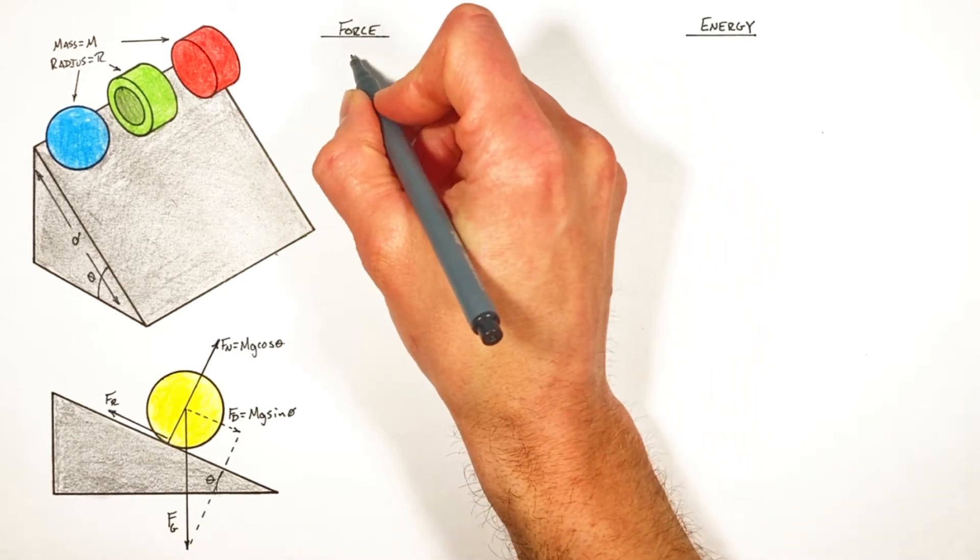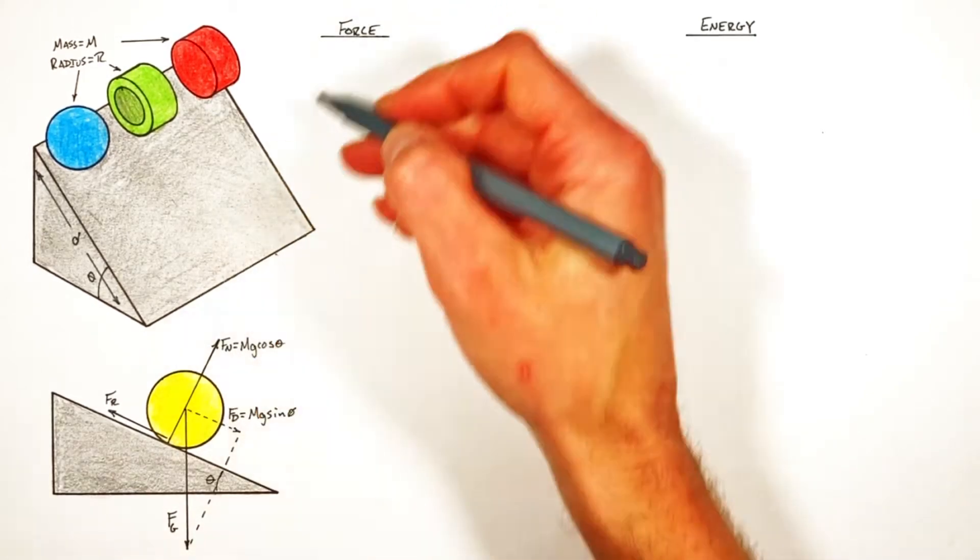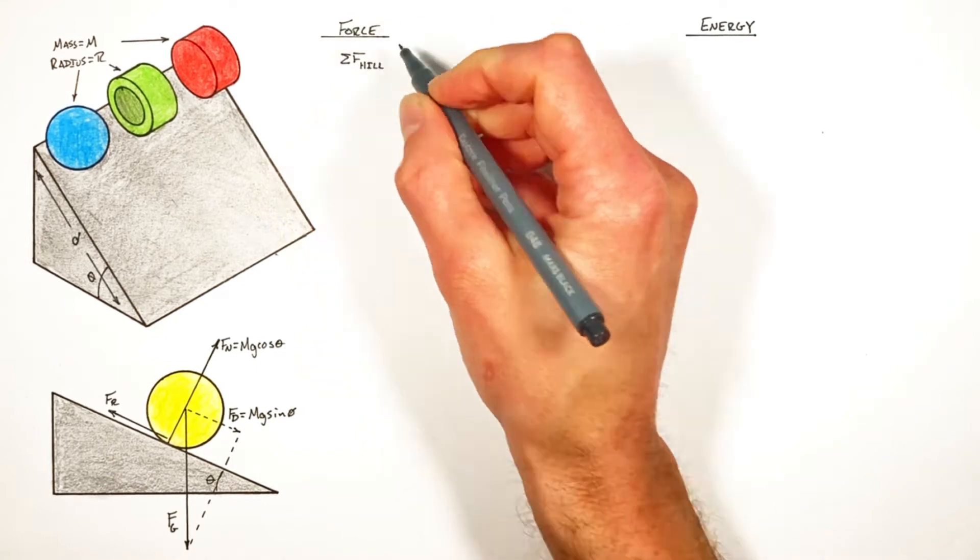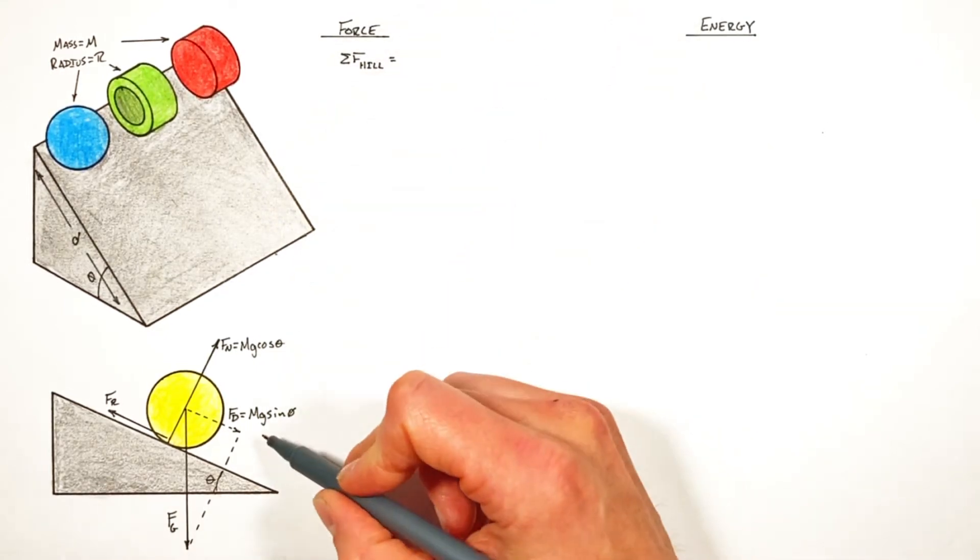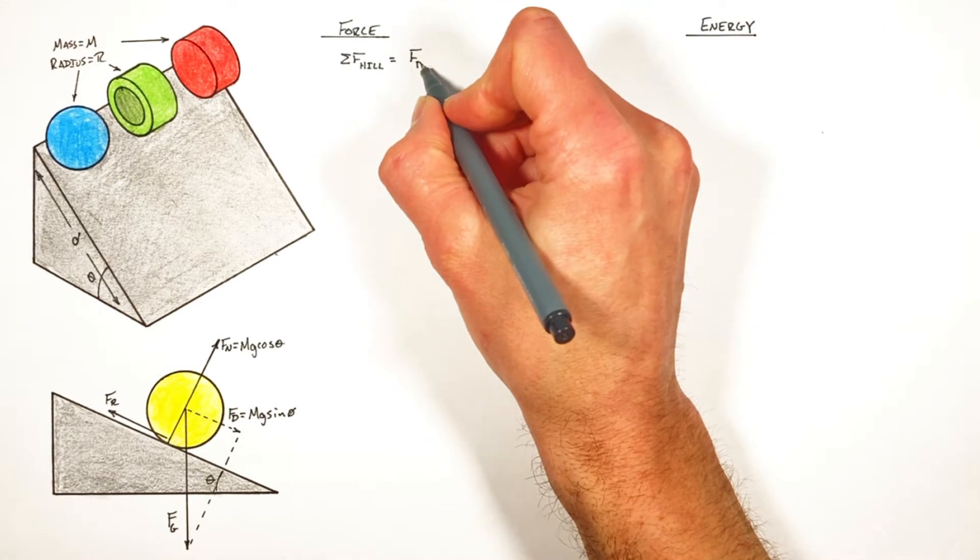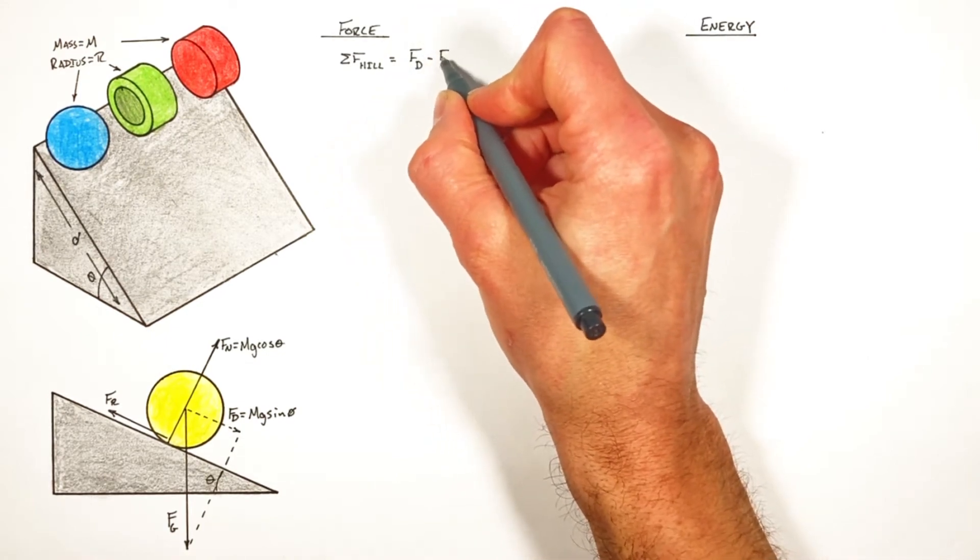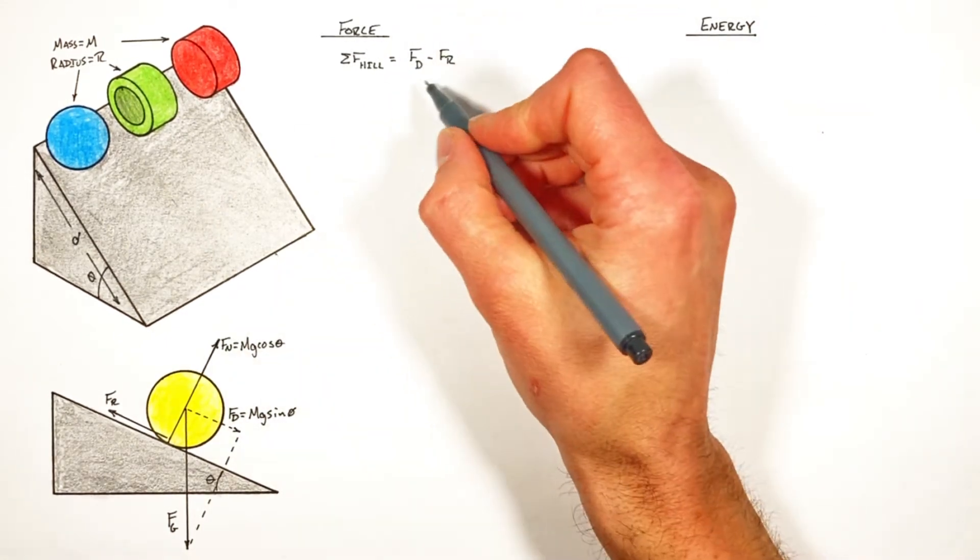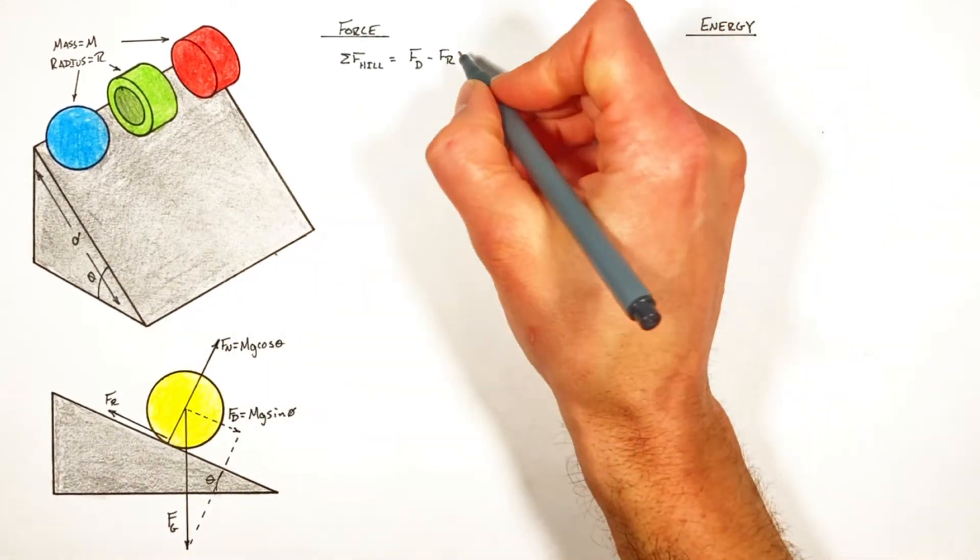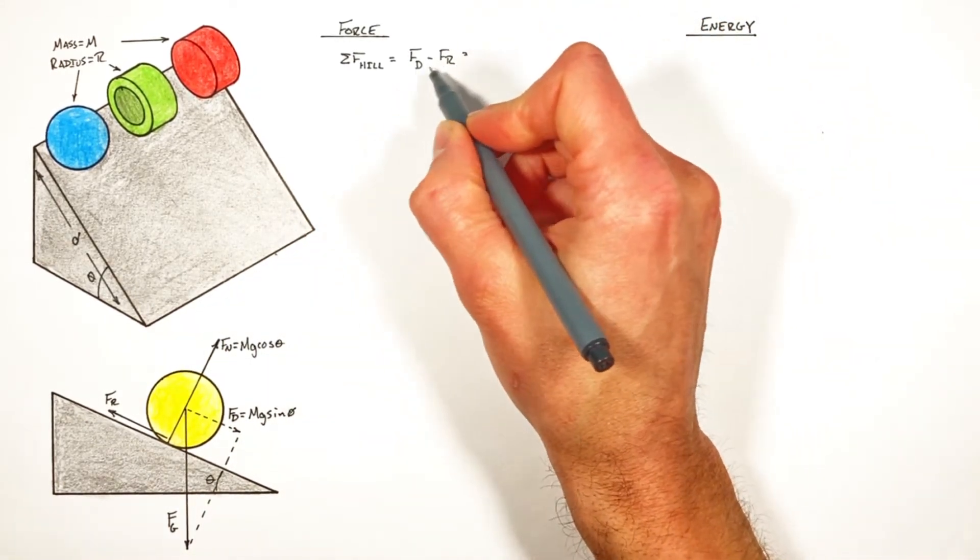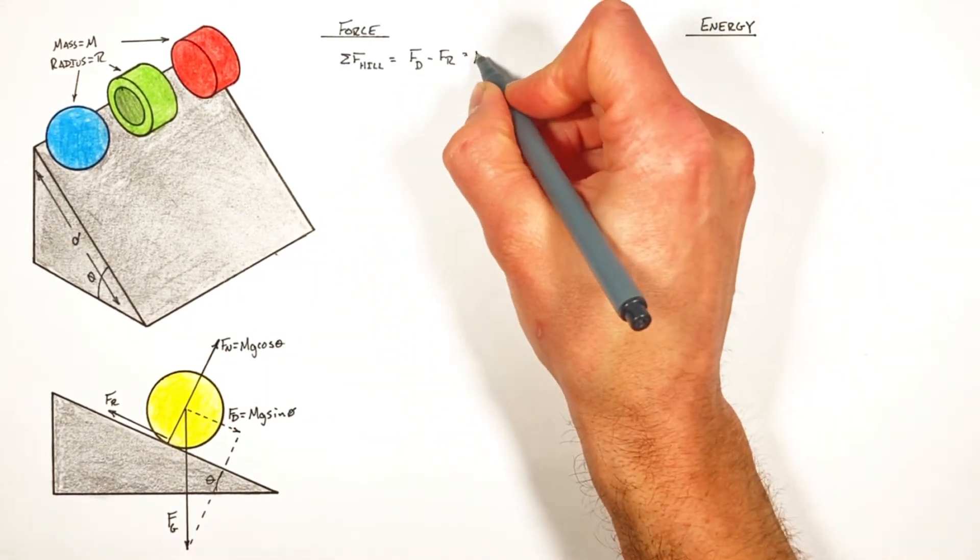So we're going to start at the sum of all forces acting on this object. Now the sum of all forces in the plane of the hill is given by the force down the hill. That's FD minus the friction force up the hill. Now this isn't a statics problem. This object's actually accelerating. So the net force produced by these is going to be equal to MA.